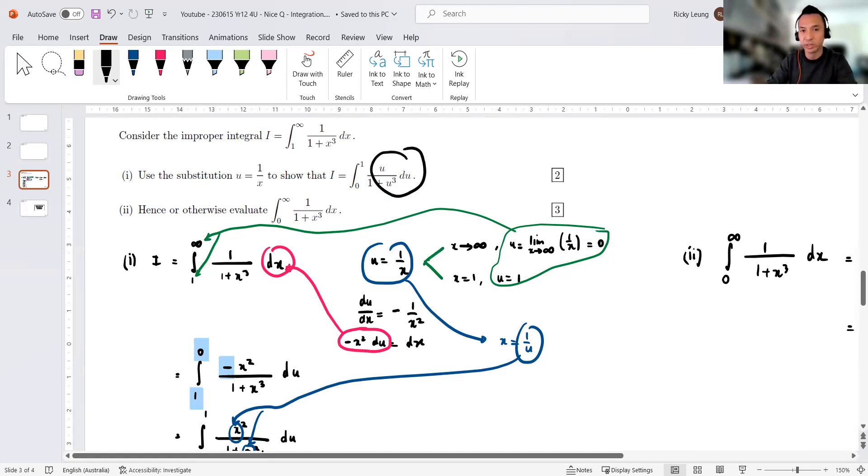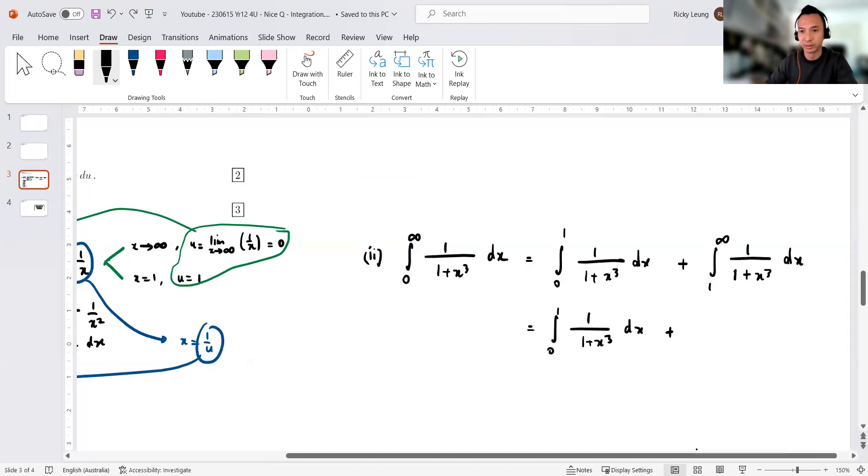Even though I can technically integrate that, this guy here, let's see. So that is that. So it becomes, you can easily, just because it's u, you can easily replace it with x, right? It becomes like that: x over 1 plus x cubed dx. Sweet. All right, now oh sorry, the limits have changed as well.